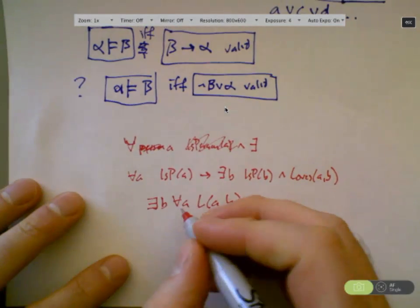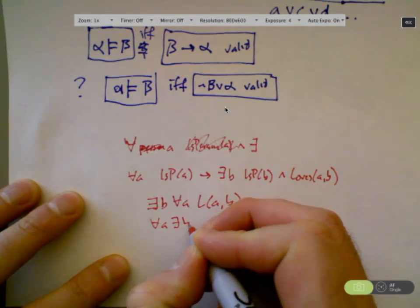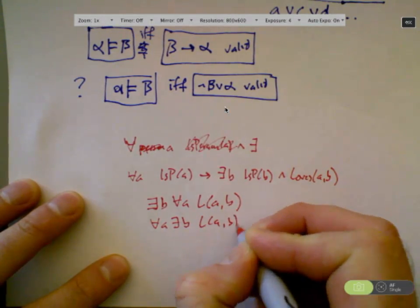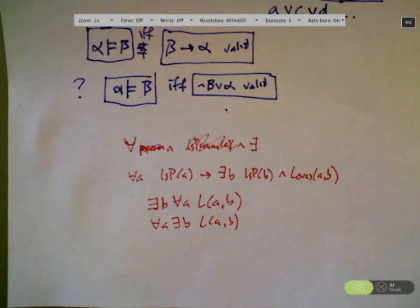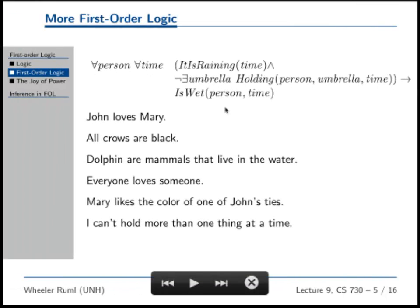So the order in which the quantifiers go is really important. There exists for-all is very different than for all A there exists B loves AB. Everybody got that? That's going to be crucial to what comes next in class. Adam, you cool? Okay.